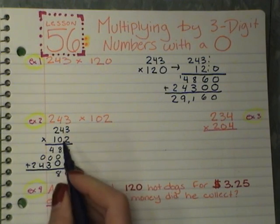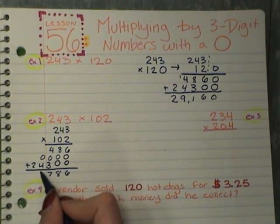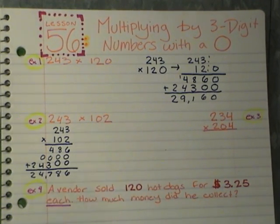6 plus all these 0's, 6, 8 plus 0, 8, 4 plus 3, 7, 4 plus 0 is 4, and 2 plus nothing is 2. 1, 2, 3, 24,786.